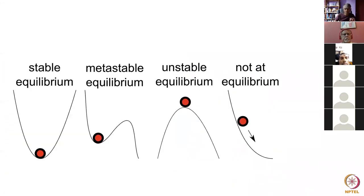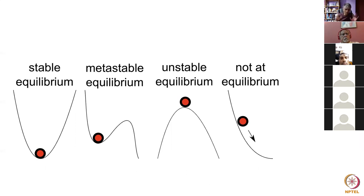Going on to equilibrium. Here I'm illustrating different forms of mechanical equilibrium. In this case we have stable equilibrium, defined by saying that if I give that ball an infinitesimal perturbation, it will go back to its original position. I'm not talking about a huge perturbation — just an infinitesimal perturbation. If it goes back to its original position, that's what we call stable equilibrium.